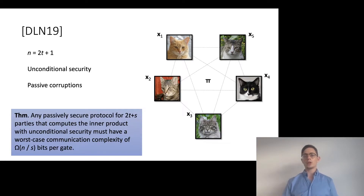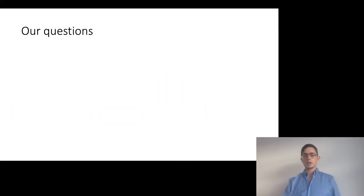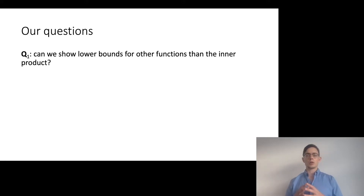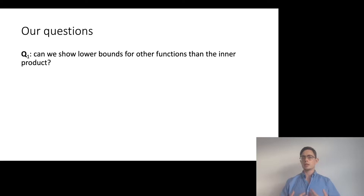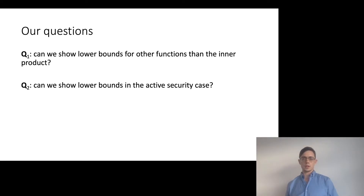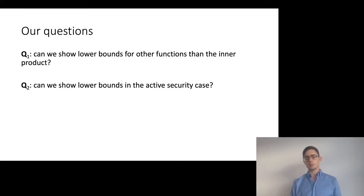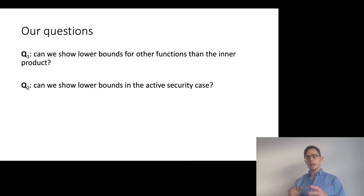Their work, however, leaves open two natural follow-up questions. One is: can we show lower bounds for functions other than the inner product? In order to establish their proof, they leveraged a particular property of the inner product, namely that it can be used to implement a private information retrieval, which is of course not the case in general. And secondly, can we show lower bounds for active security? Because it's clear that any actively secure protocol immediately gives a passively secure protocol, so the result of Damgaard, Larsen, Nielsen still applies. But in order to use it for the active security case, we would need to let S be linear in the number of players, and then the lower bound becomes trivial.